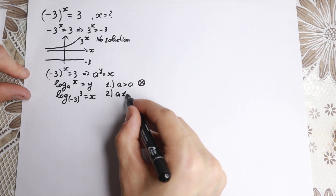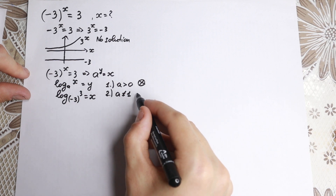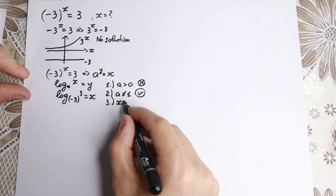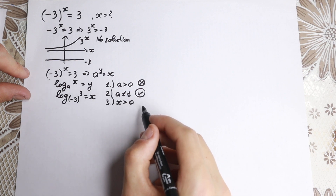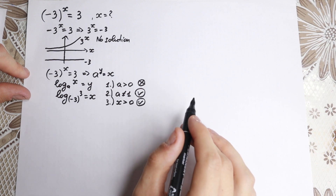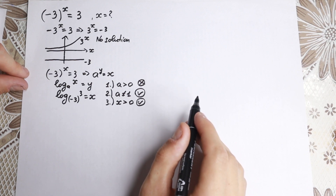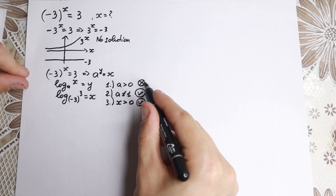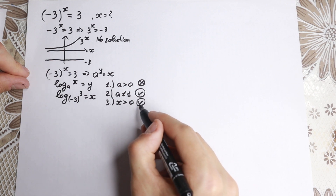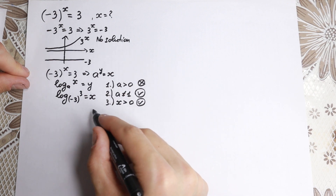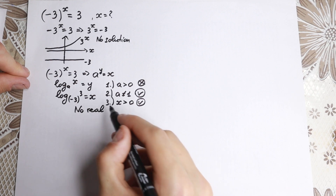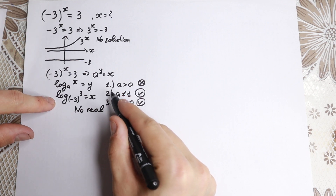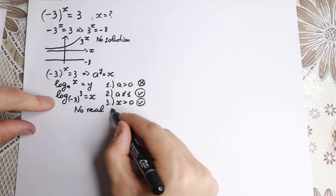Second, a must not equal 1 — and here a is negative, so a is not equal to 1, which is fine. Third, x must be greater than 0, and that is also satisfied here. However, all three conditions must work together — we don't just need two working when one is not. Since the first condition fails, this is not possible, and we have no real solution.